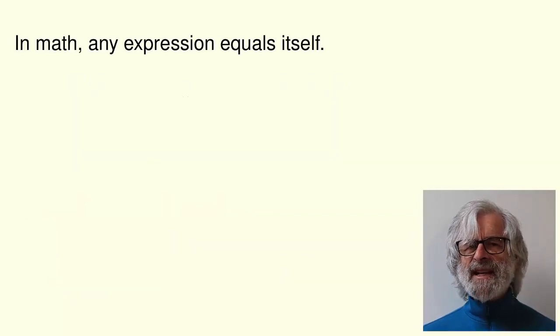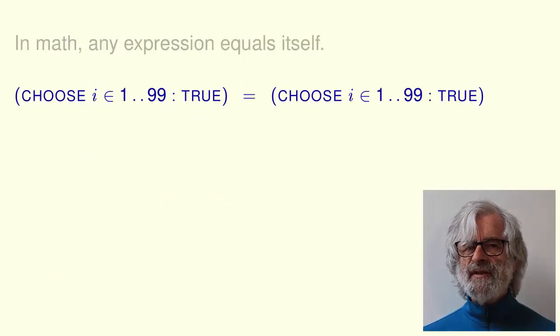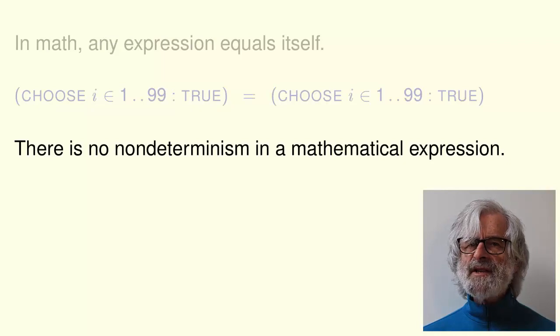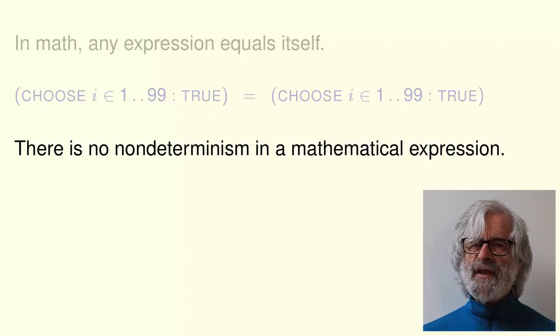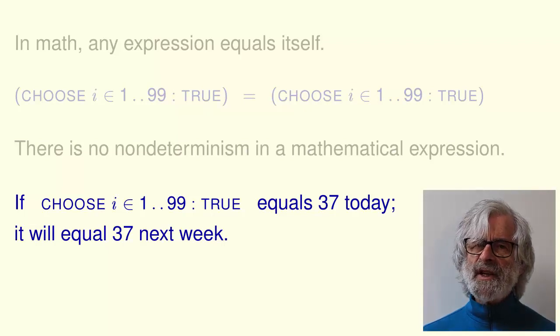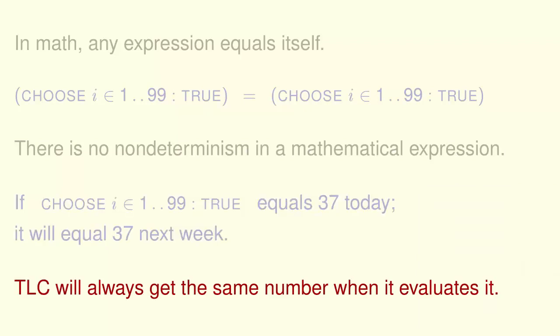In math, any expression always equals itself. So this choose expression always equals itself. There is no non-determinism in any mathematical expression, including a choose expression. If this choose expression equals 37 today, it will still equal 37 next week. TLC will always get the same number when it evaluates this expression.